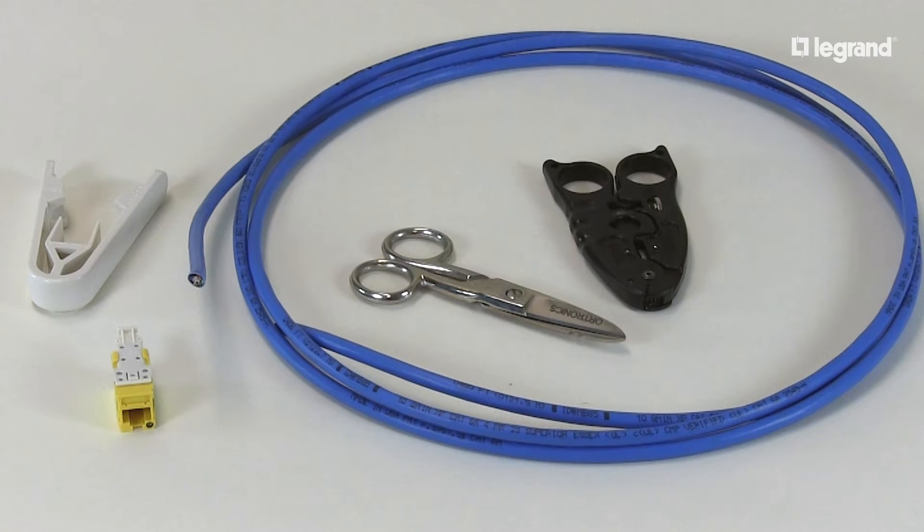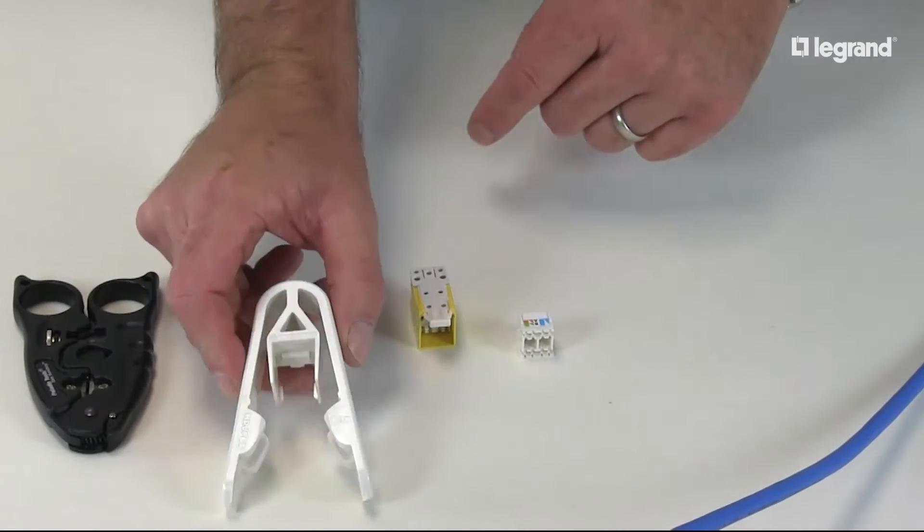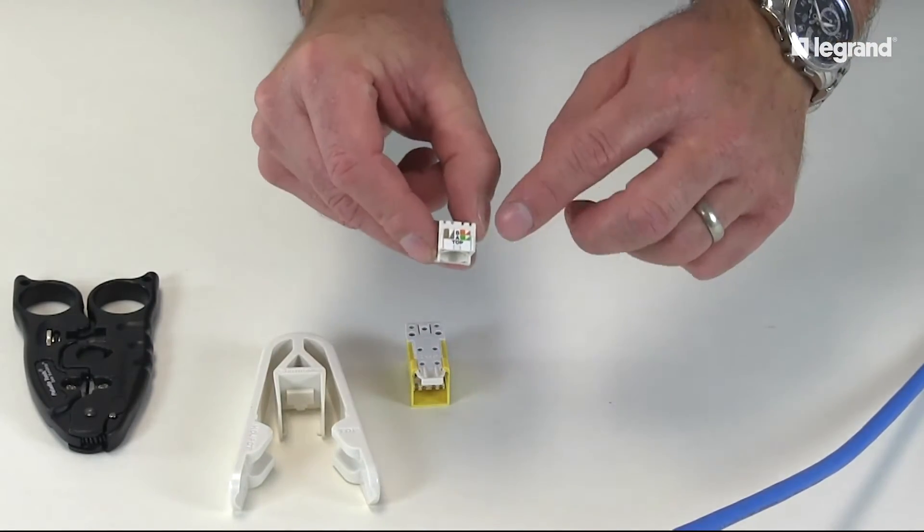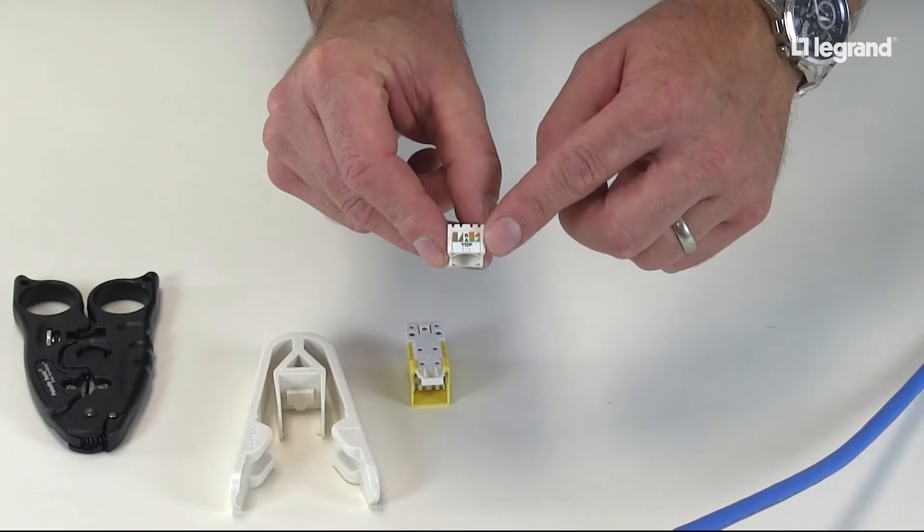Today we're going to use lineman shears. Before you start, notice the termination tool, jack, and lacing cap all have a label that indicates the top of the component. This will help in the final steps of the termination.